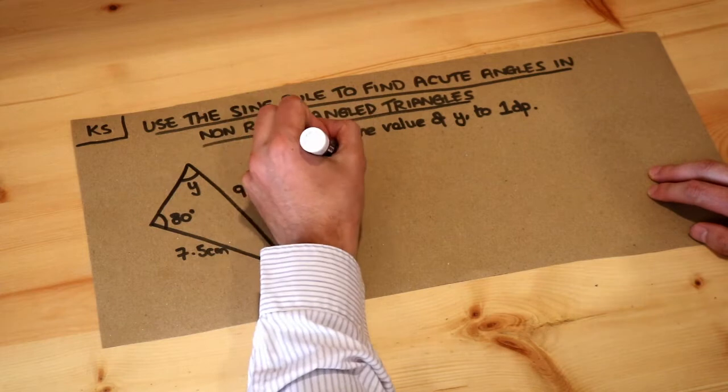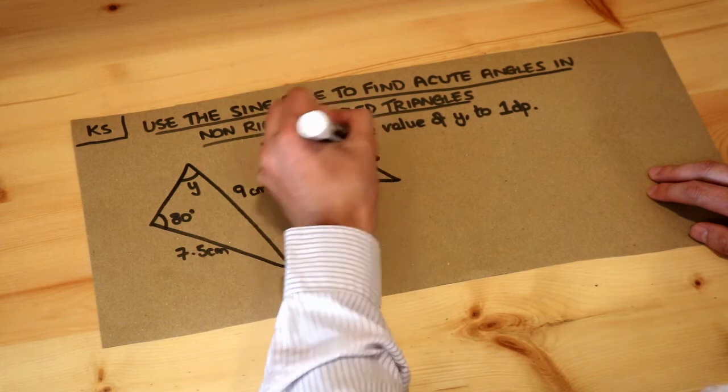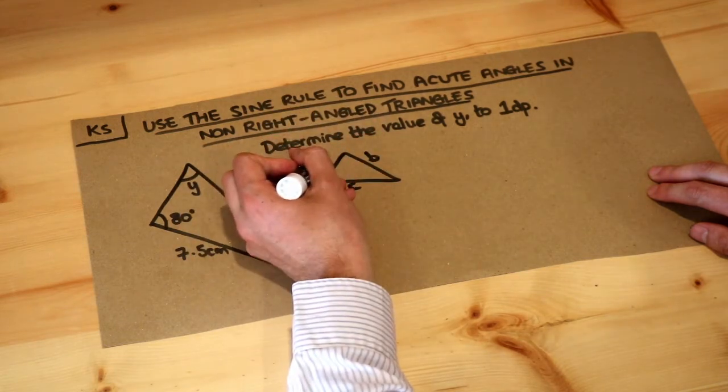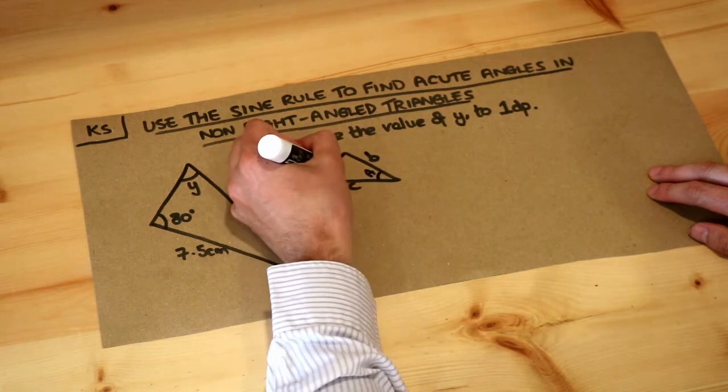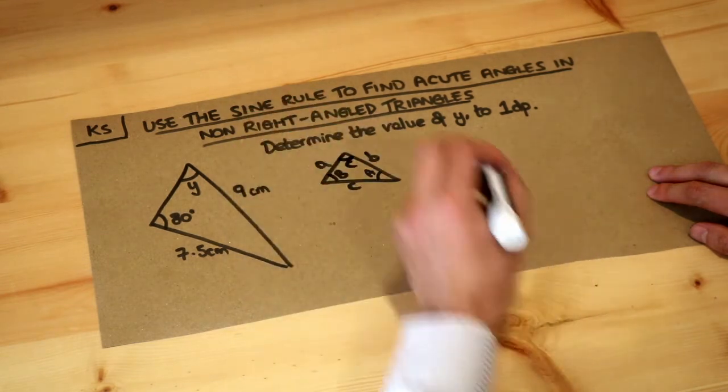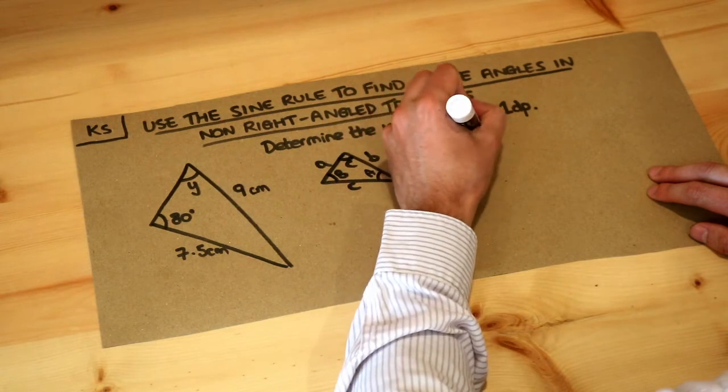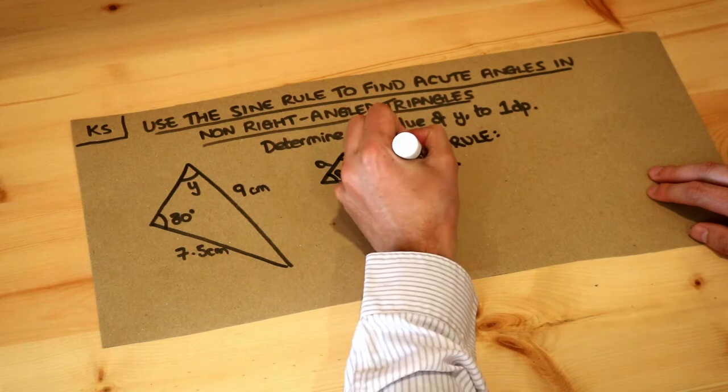Remember how the sine rule worked: if we had a triangle with sides little a, little b, and little c, and to label the angles opposite the side little a we would have the angle capital A, opposite the side little b we'd have capital B, and opposite side c we have angle capital C.